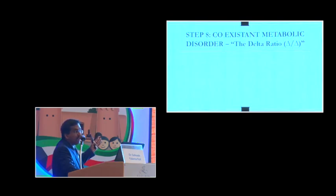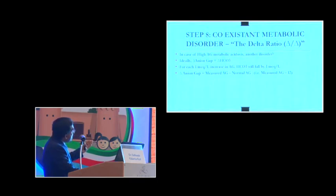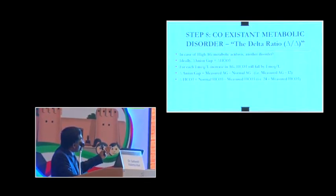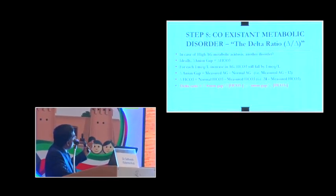Is there a coexistent metabolic disorder? Then you have to check the delta ratio. Ideally, delta anion gap is equivalent to delta bicarbonate. Delta anion gap means the measured anion gap minus the normal anion value, which is 12. Delta bicarbonate is normal bicarbonate minus the measured bicarbonate. You calculate this ratio, and if you have a ratio of 1, it is pure anion gap metabolic acidosis. If the ratio is more than 1, it is associated with metabolic alkalosis. If the ratio is less than 1, it is an associated normal anion gap metabolic acidosis.